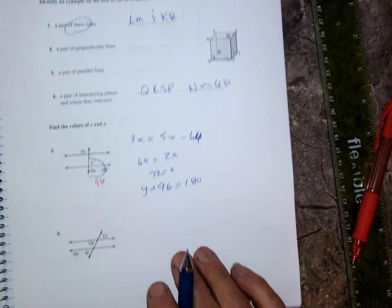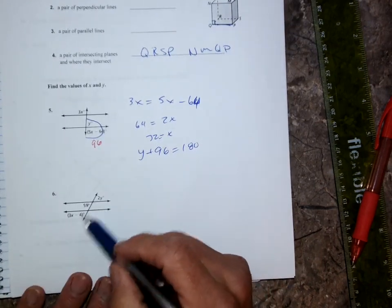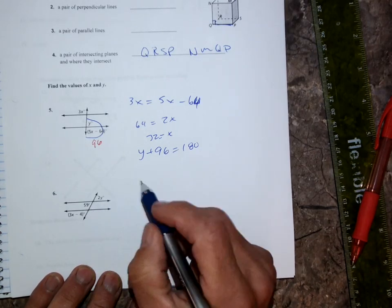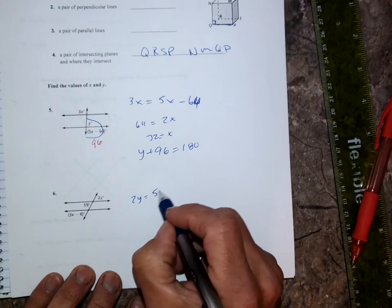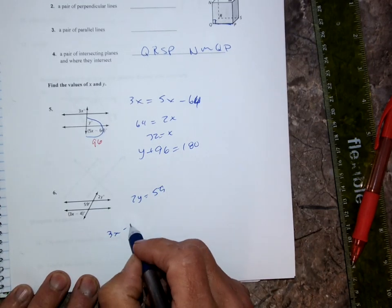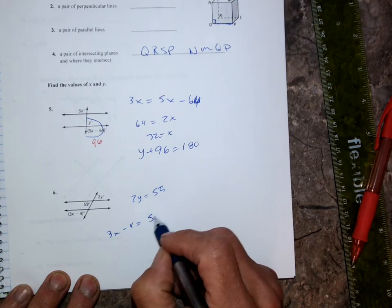Number 6: these are corresponding angles so they're equal. Find the value of x. Once you get x, I know 2y—those are vertical angles, so 2y equals 59. And these two are equal: 3x minus 4 equals 59, and you can do that.